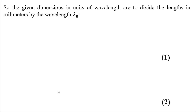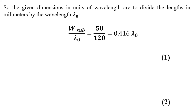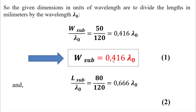To find our dimensions in function of lambda zero, we divide the width and the length of the substrate by lambda zero. So the width of the substrate divided by lambda zero: 50 millimeters divided by 120 millimeters equals 0.417 lambda zero. This is the first dimension in function of lambda zero.